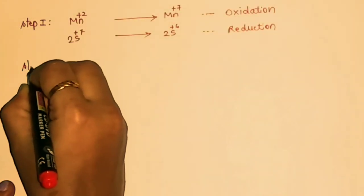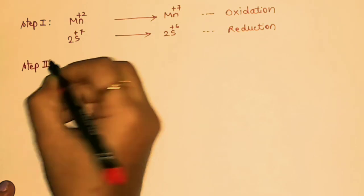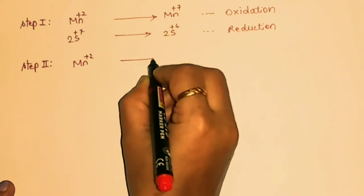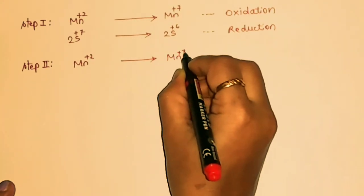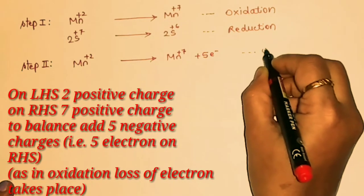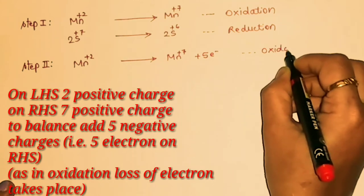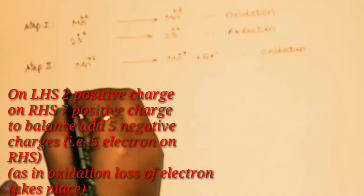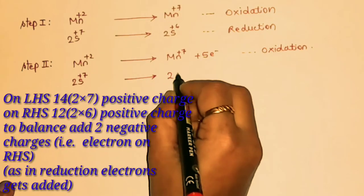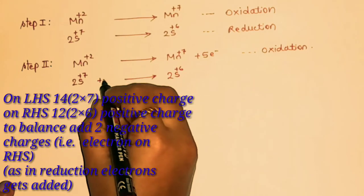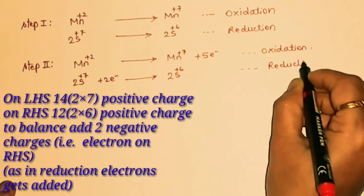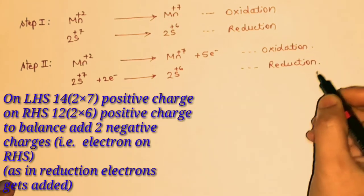For step 2, we add electrons on the right-hand side for oxidation: Mn²⁺ → Mn⁷⁺ + 5e⁻. For reduction, there are +14 charges on the left-hand side and +12 on the right-hand side, so we add 2 electrons on the left-hand side: 2e⁻ + 2S⁺⁷ → 2S⁺⁶.